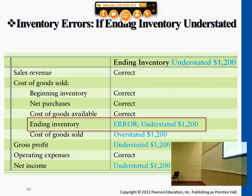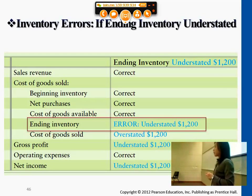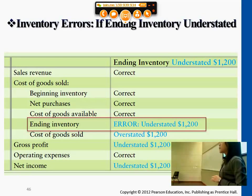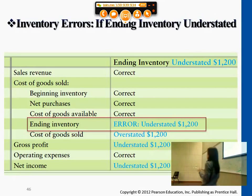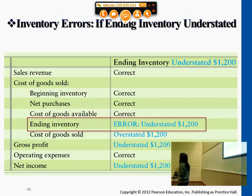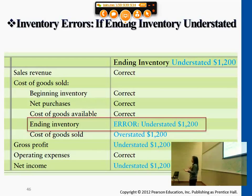Now, inventory and cost of goods sold — which one is a permanent account and which one is a temporary account? The temporary account is the one that we close out at the end of the period through the closing entry. So between the inventory account and cost of goods sold expense, which one gets closed out and which one stays in the business's financial statements and carries on?